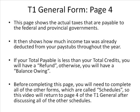Page 4 of the T1 General Form shows the actual taxes payable to the federal and provincial governments. It then shows how much income tax was already deducted from your pay stub throughout the year. If your total payable is less than your total credits, you will have a refund; otherwise you will have a balance owing. Before completing this page, you will need to complete all the other forms called schedules, so this video will return to page 4 after discussing all the other schedules.